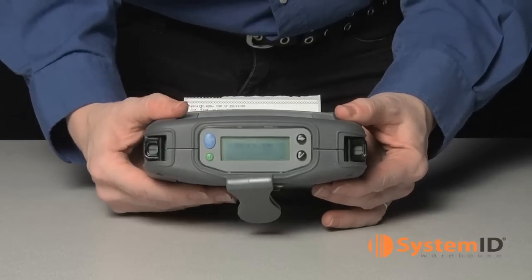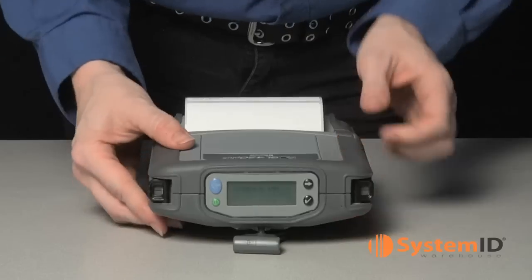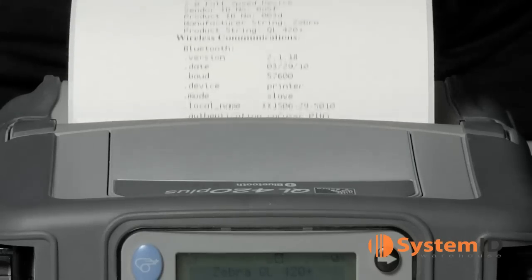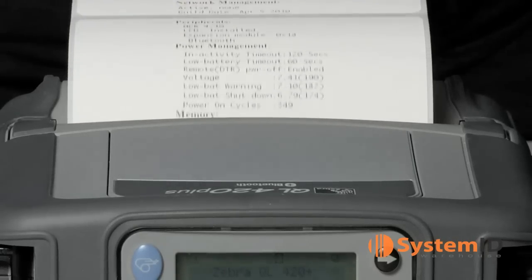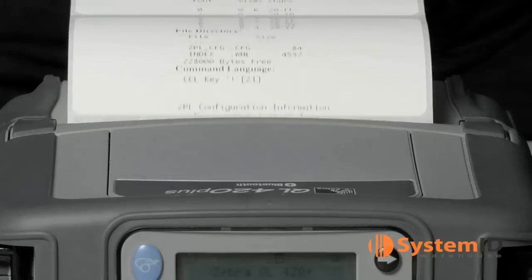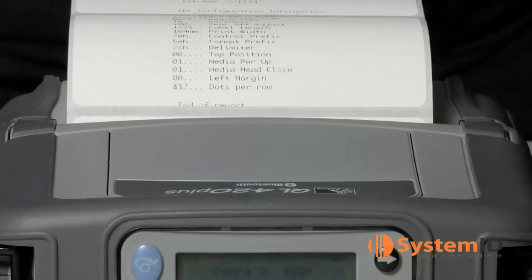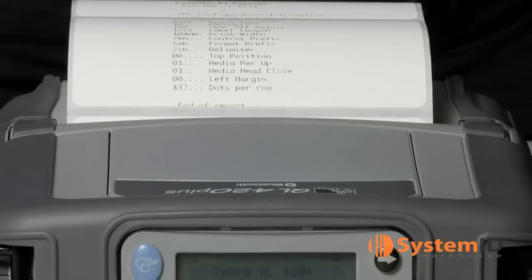When the QL420 starts to print, release the Feed button. The QL420 will print a line of interlocking X characters to ensure all elements of the print head are working. It will also print out the software version loaded and then print two reports.